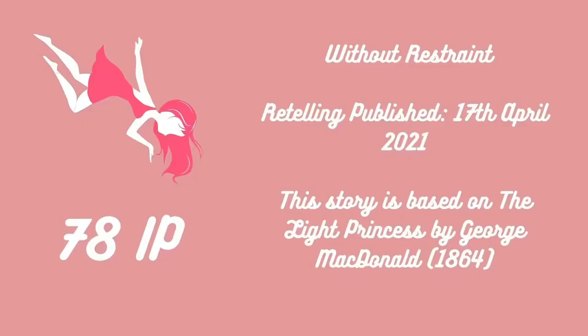Number 8: coming in with 78 interest points is About Restraint, published on the 17th of April 2021 and based on The Light Princess by George MacDonald, 1864. I think this story suffers from the same problem of having a thumbnail that's too simplified — the colours don't really pop and it doesn't say much about the story itself. I really like the main character of this story and I think this is another that may have an accompaniment down the line, because of its connection to how people who are disabled really think about their disability. I definitely recommend checking this story out.